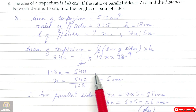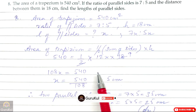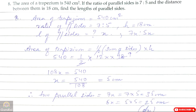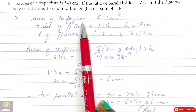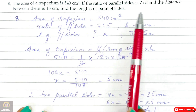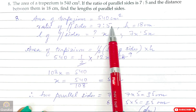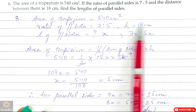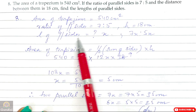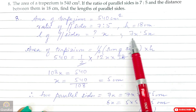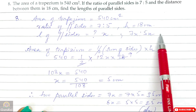Question 8: The area of a trapezium is 540 cm square. If the ratio of the parallel sides is 7:5, and the distance between them is 18 cm, find the length of the parallel sides. Area = 540 cm square, ratio of parallel sides = 7:5, height = 18. Let the length of the parallel sides be 7X and 5X.